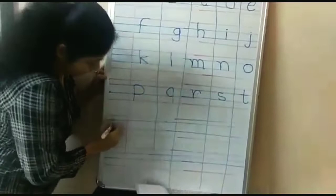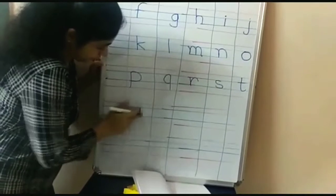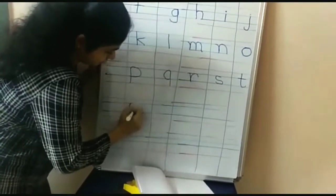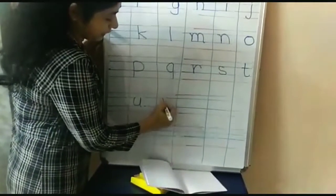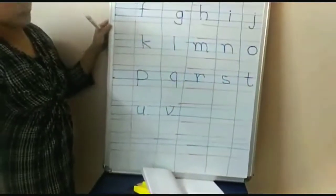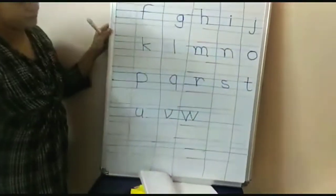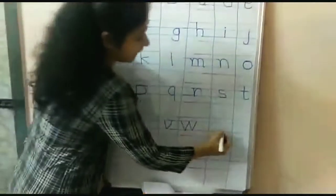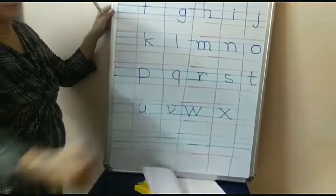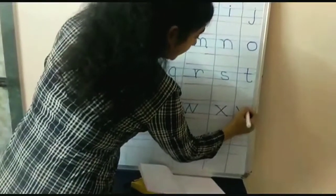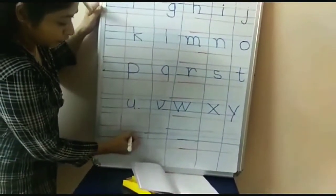We'll write U. Blue line to blue line. We will write X, blue line to blue line. We will write Y, blue line to red line down. And we will write Z, blue line to blue line.